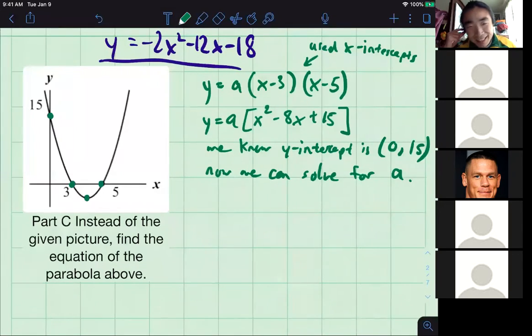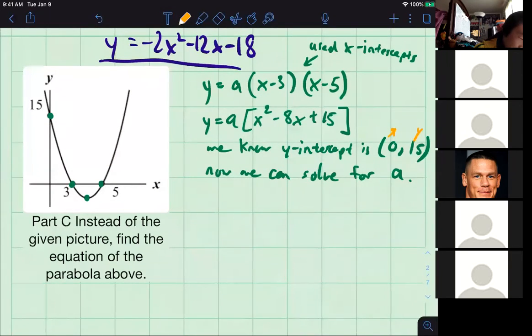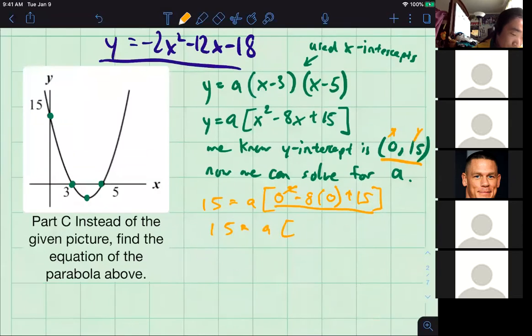Victor, any ideas what to do next? Ezra, you're right. The a value is one. We'll go through some steps to show why that is. Over here, you have x, y points. There's x, there's y. So 15 is equal to a, and now you can do 0 squared minus 8 times 0 plus 15. We're using what we know from the definition of being a y-intercept. X is 0, y is a specific value. 15 equals a times all this stuff. This goes away, this goes away. A times 15. So a has to be positive 1.